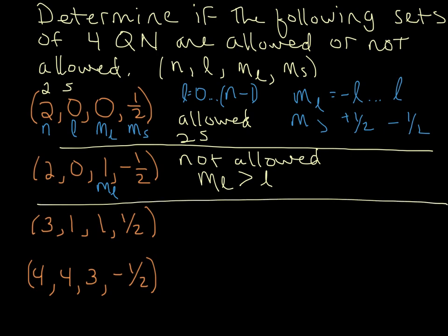So let's look at the next set. N equals three, of course that's fine. L equals one, so that's less than n minus one. So for n equals three, l can be zero, one, or two, and so clearly that's allowed.